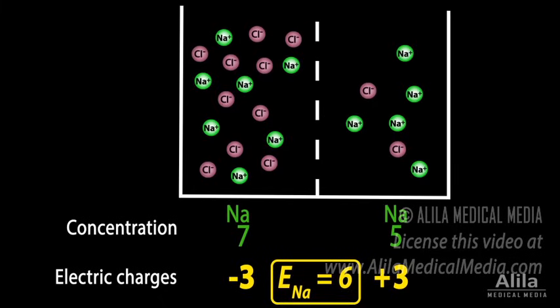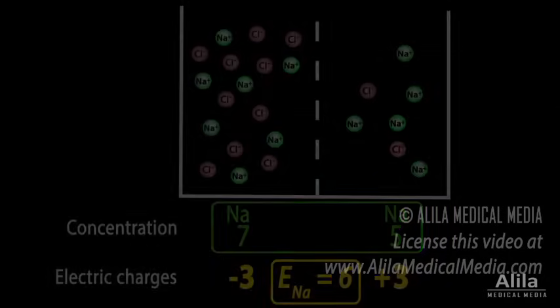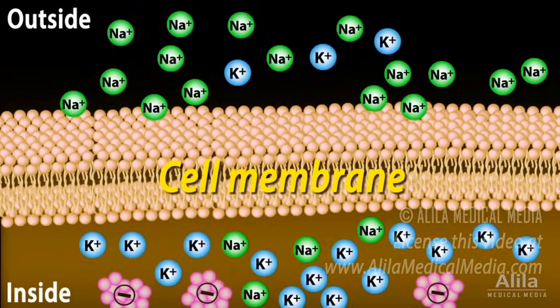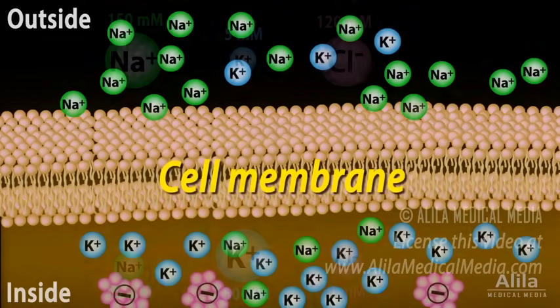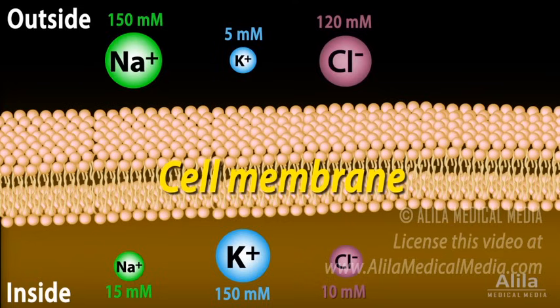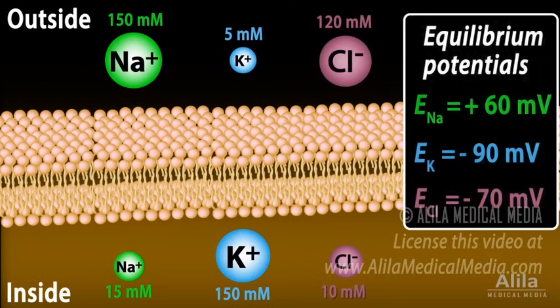A typical resting neuron maintains unequal distributions of different ions across the cell membrane. These gradients are used to calculate their equilibrium potentials. The positive and negative signs represent the direction of membrane potential.